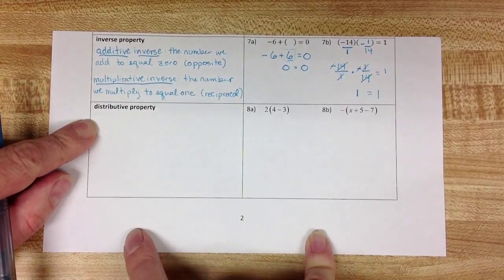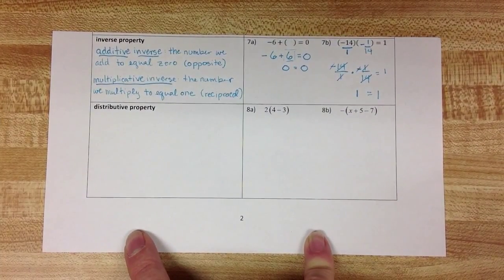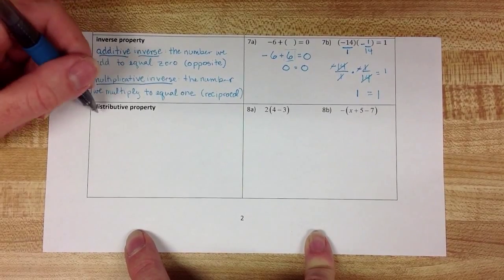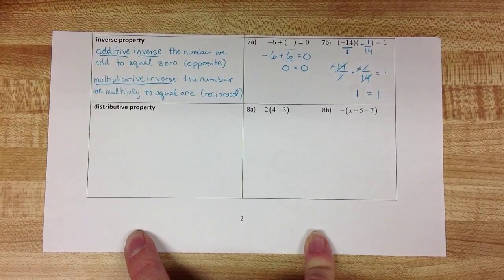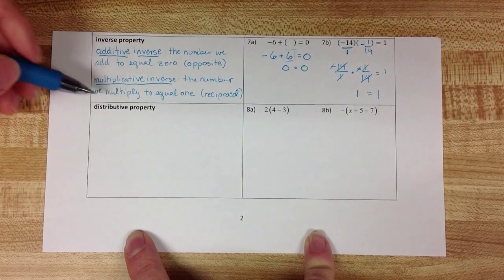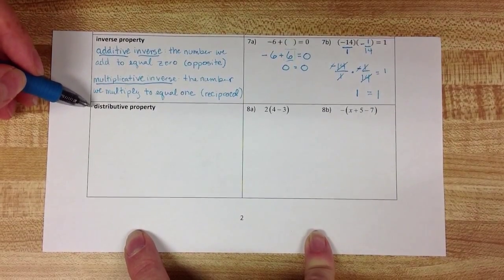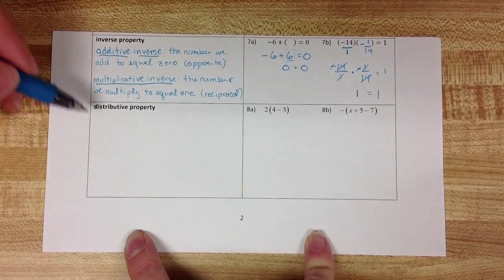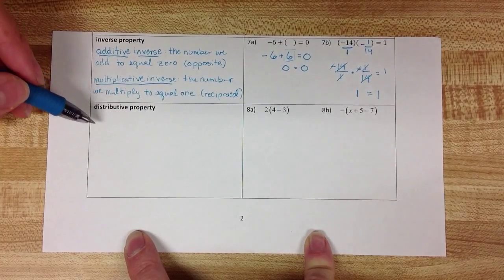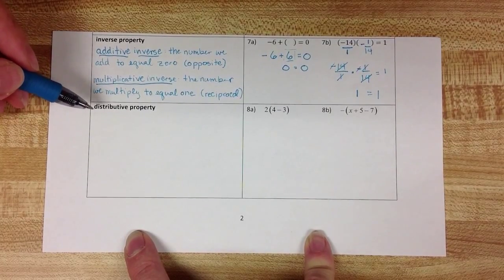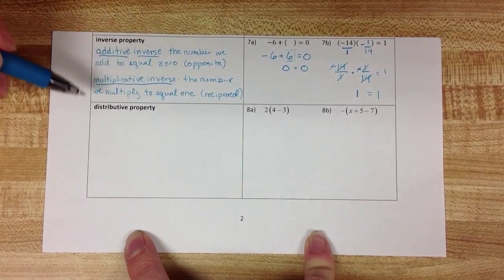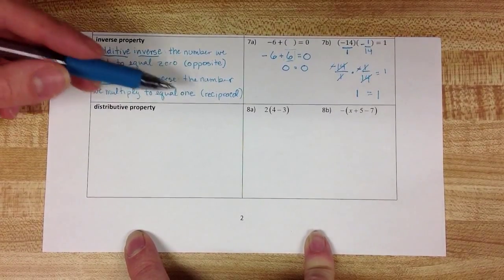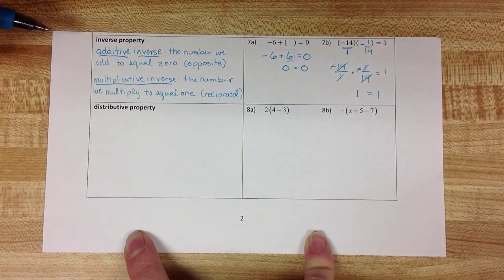Our final property to look at for this section is the distributive property. And I want you to think of the distributive property just like you would think of distribution anywhere else. A Pepsi distributor is the person that drives the Pepsi truck around to all of the Circle K's or King Soopers or 7-Elevens and distributes shipments of soda. They take their goods and give them to all of the different stores on their route.